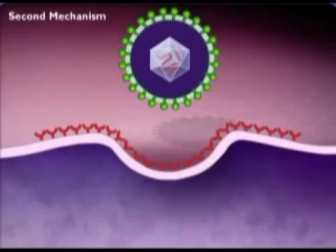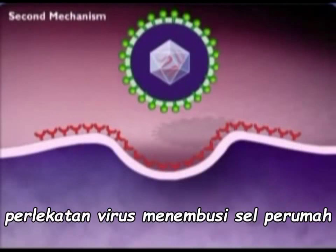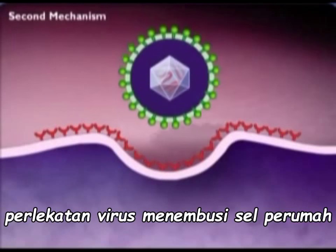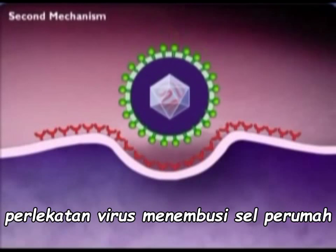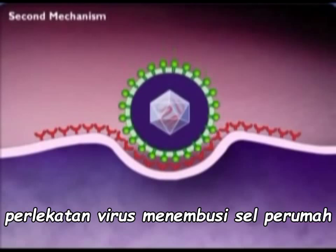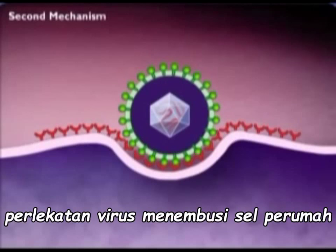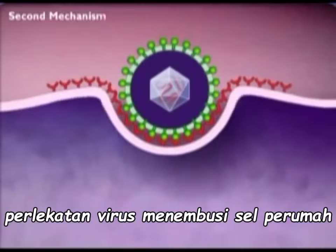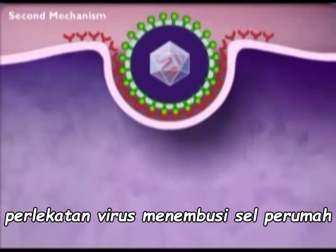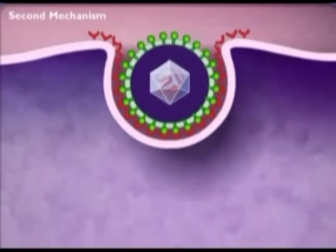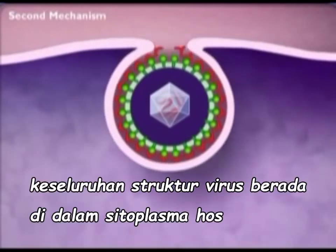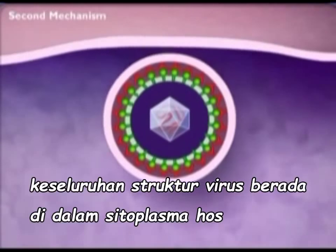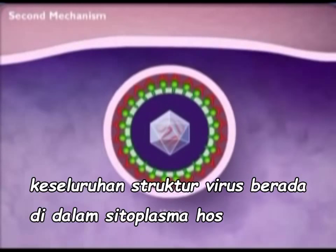The enveloped virus adsorbs to the host cell by specific proteins on its surface and the virion is taken in by endocytosis. In this process, the host cell plasma membrane surrounds the whole virion and forms a vesicle.